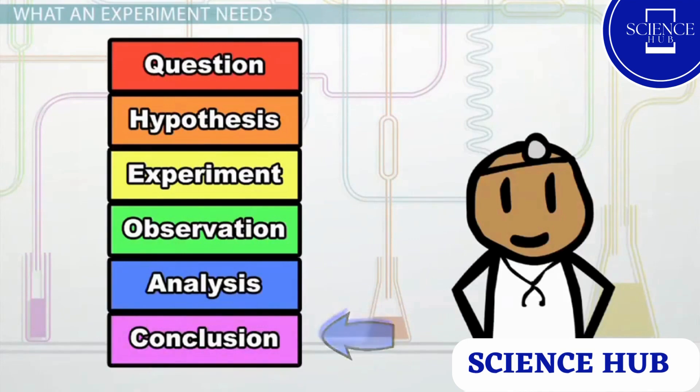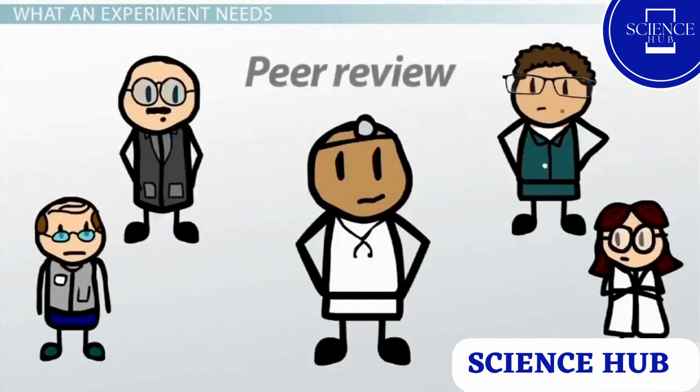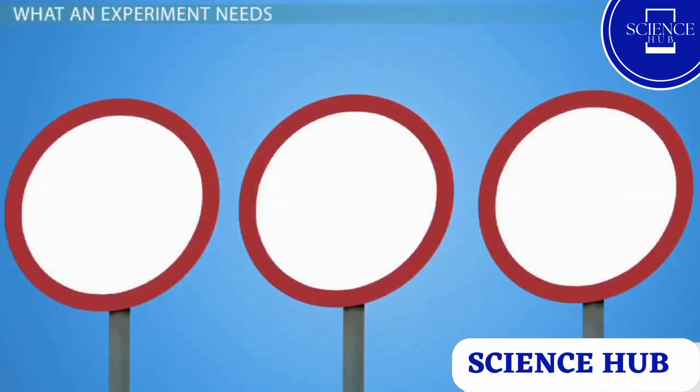Scientific experiments are different from other kinds of tests because they're required to fit in with the scientific method. Another important factor is peer review by the science community. A scientist's work isn't generally recognized unless they follow the standards set by other scientists around the world. A few basic rules apply to the design of a good experiment. Let's take a look at what a science experiment needs.